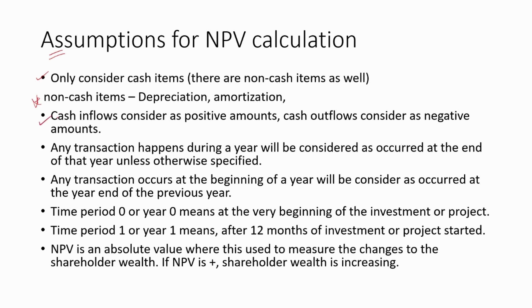Cash inflows are considered as positive amounts, and cash outflows are considered as negative amounts. If it is a cash inflow, we use a positive value; if it is a cash outflow, we use a negative value. Negative values can also be denoted by parentheses — for example, a $2,000 cash outflow can be written in parentheses instead of using a minus sign.